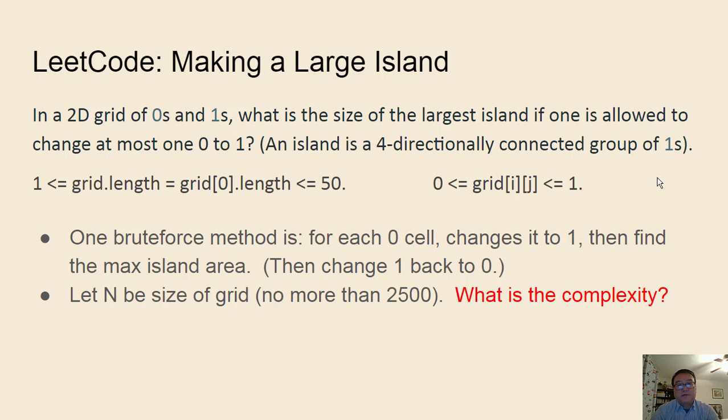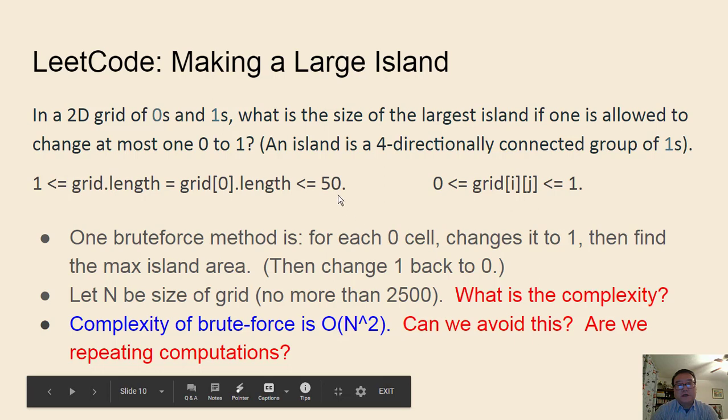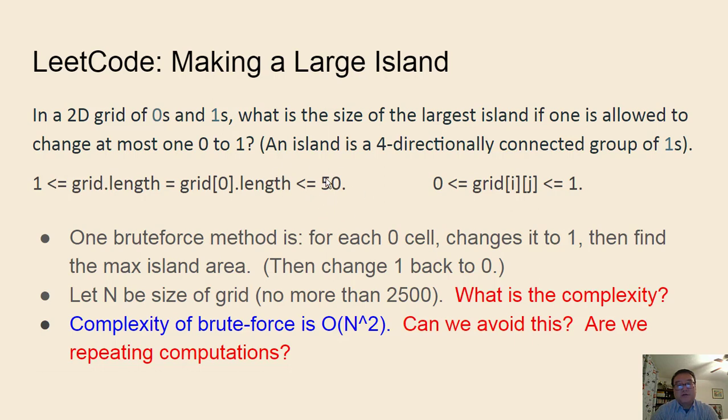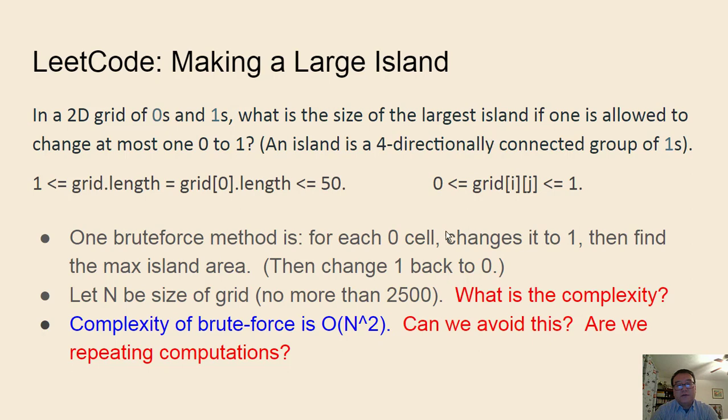What is the time complexity of this algorithm? Let N be the size of the grid. For this question, that will be no more than 2,500. The complexity would be N squared because there are order N cells to try to change 0 to 1, and after each change, the DFS will take linear time. So the question is, can we avoid this quadratic complexity? In general, the answer is yes. Oftentimes the reason we can reduce the complexity is that in the brute force method, we are actually repeating computations. In particular, in this case, the computations we are repeating are doing DFS again and again.